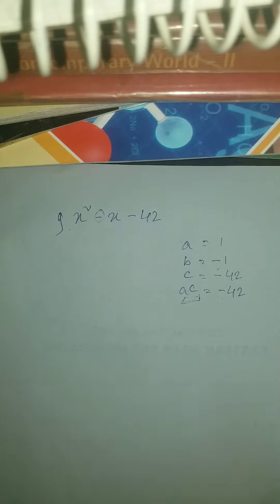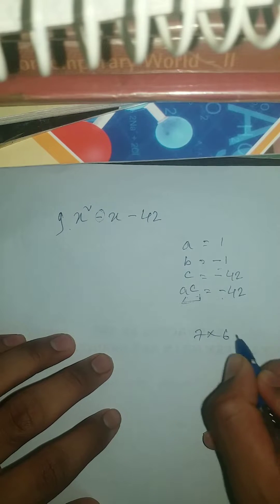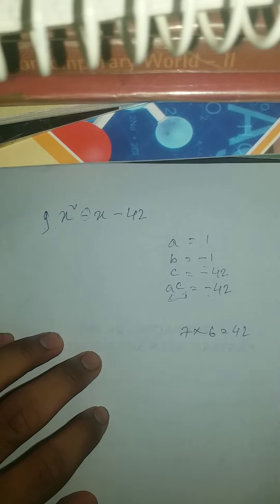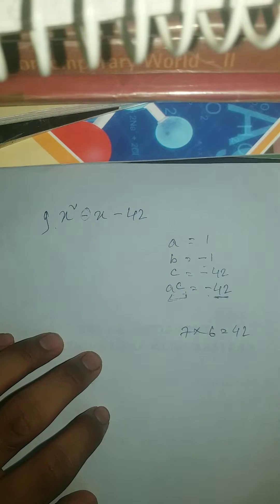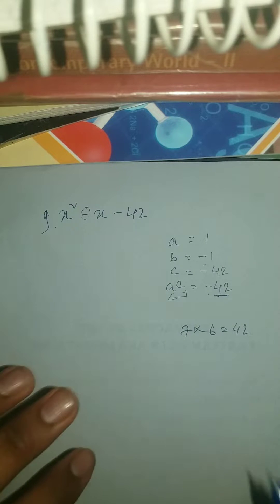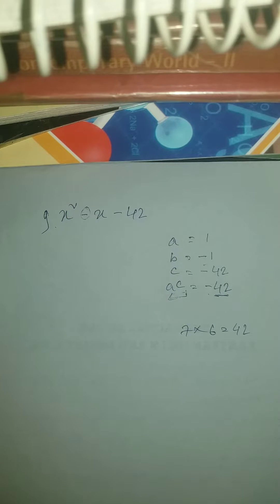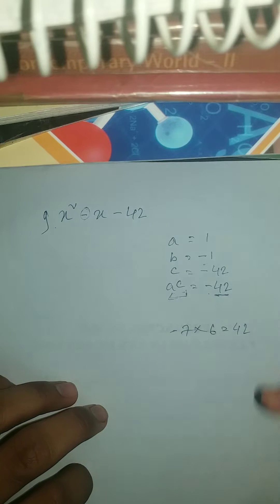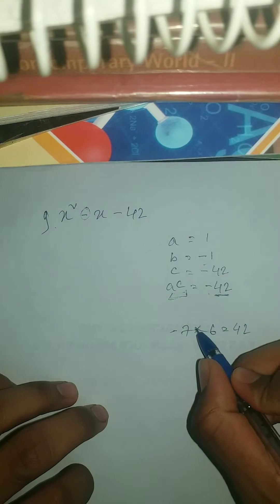So what is 7 into 6? 7 into 6 is 42. So yes guys, we got it. But here we need minus 1 and minus 42. So if I put here minus 7 and plus 6.